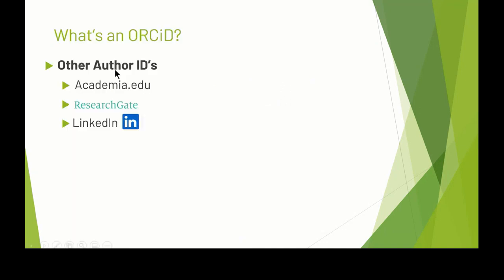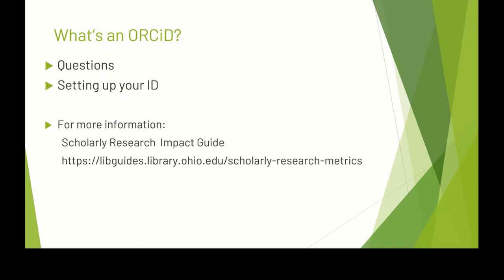There are other author IDs in Academia.edu and ResearchGate, which are primarily social network sites that also share articles and index impacts. You can also create an ID in LinkedIn for your publications as well as your activities. That's really the end of my presentation — it's relatively short. For more information about the IDs, you can go to my and Hannah Schmillan's scholarly research metrics libguide.